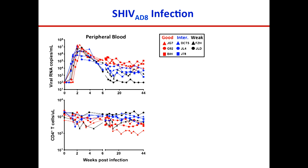We wanted to know what was associated with the generation of broad neutralizing antibody responses. The monkeys that developed good neutralization were the ones with very high viral loads in their plasma and low CD4 counts. Conversely, monkeys that controlled virus very well did not generate good neutralizing antibody responses.